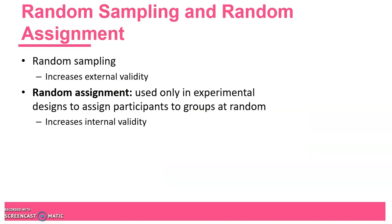An important point: random sampling is not the same as random assignment. Random assignment is used in experiments — it's a component of experimental design necessary for internal validity. Random sampling helps increase external validity, allowing you to generalize results to the population of interest. For frequency claims, external validity is quite important and internal validity doesn't even apply, whereas for experiments internal validity is critical if you want to make a causal claim.